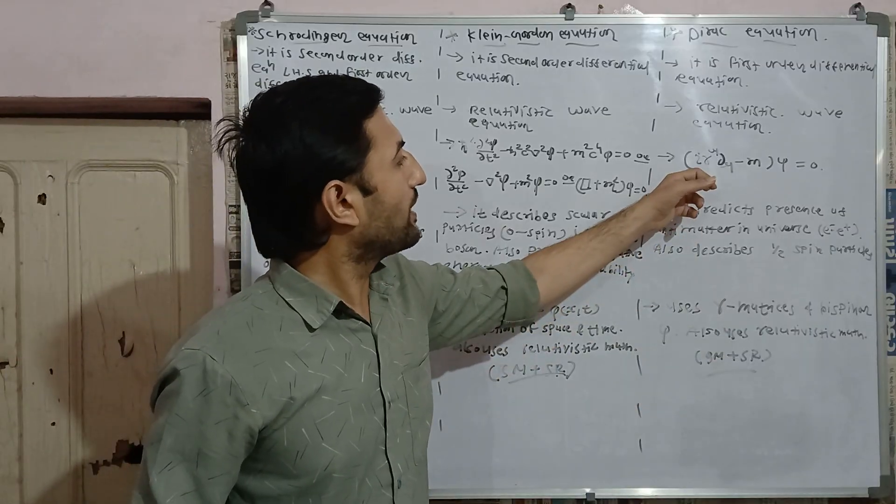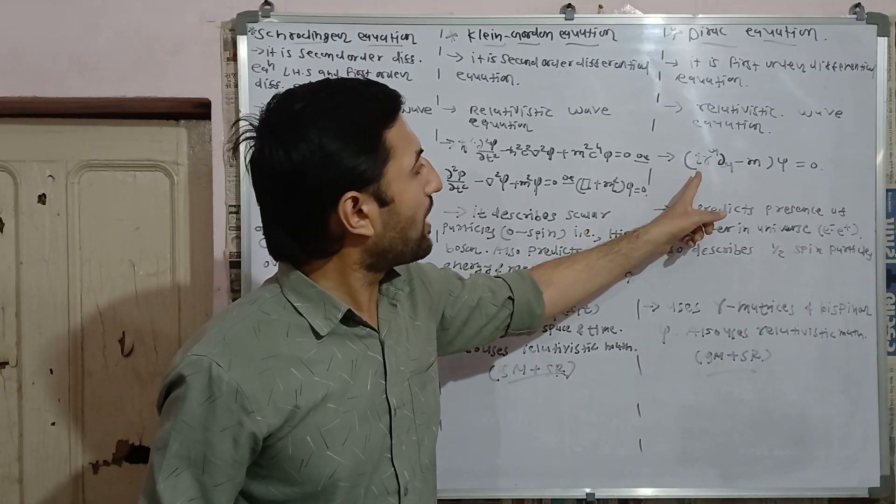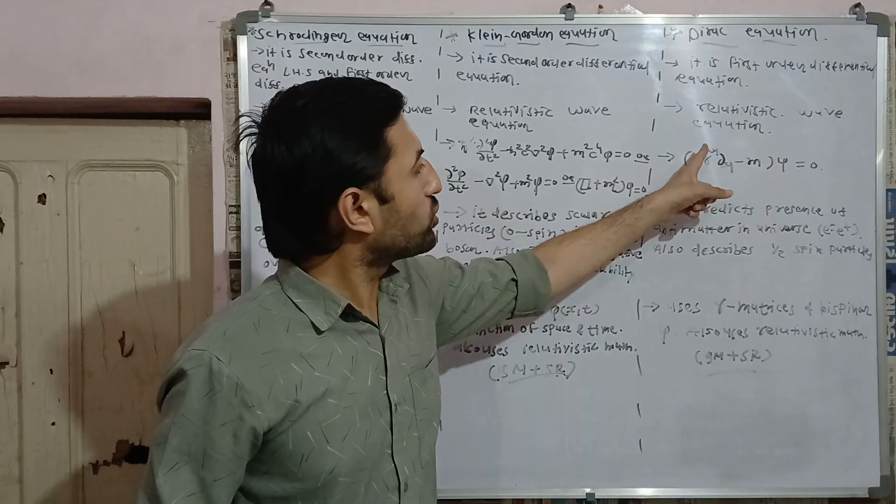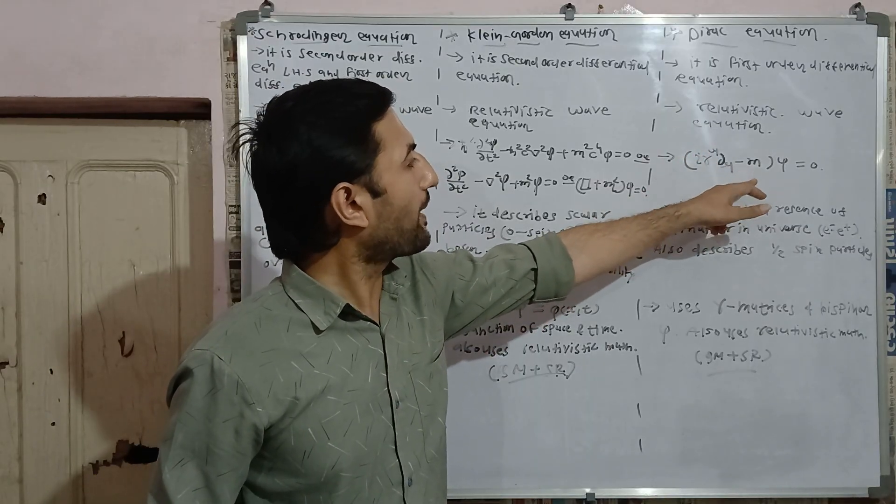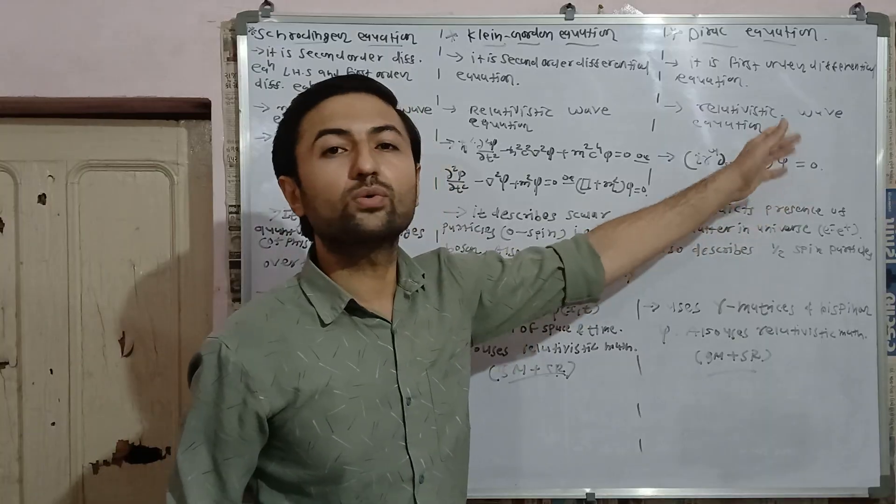Dirac equation is written as in bracket i gamma raised to mu which is gamma matrix del mu minus m bracket close into psi equals zero.